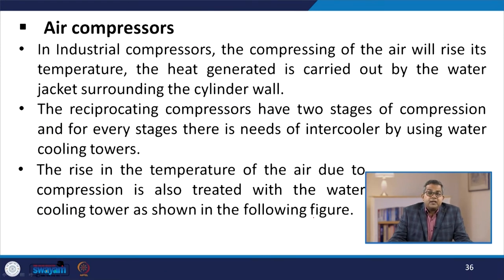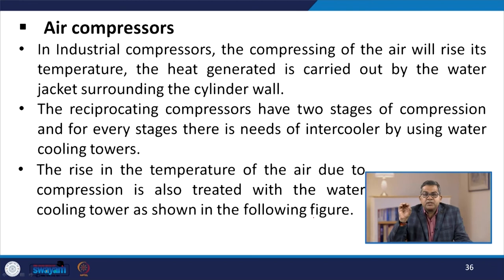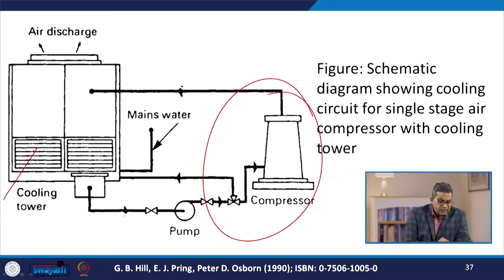In air compressors, the compression of air raises its temperature, generating excessive heat that is carried away by water jackets surrounding the cylinder wall. Reciprocating compressors have two stages of compression and for every stage there is a need for an intercooler using a water cooling tower. The rise in temperature of air due to compression is also treated with a water cooling tower, as shown in the schematic diagram for a cooling circuit for a single stage air compressor.